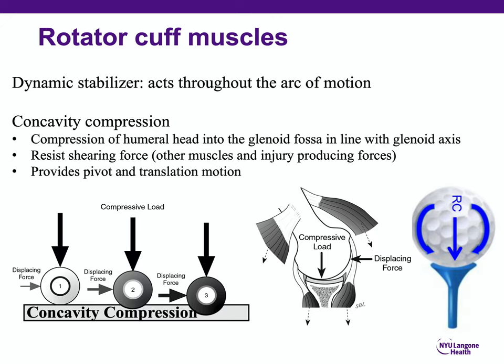The rotator cuff muscles are the dynamic stabilizers and act throughout the arc of motion. They produce concavity compression, compressing the humeral head into the glenoid fossa in line with the glenoid axis, which resists shearing forces produced by the large muscles acting around the shoulder. At the same time, they provide smooth pivot and translation motion without causing subluxation or dislocation.